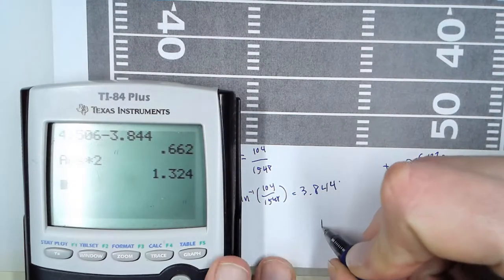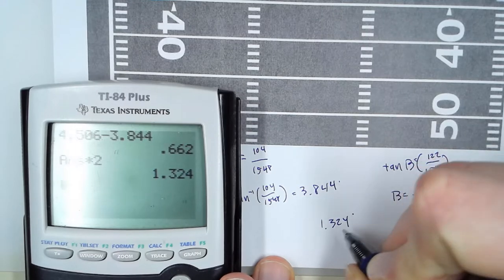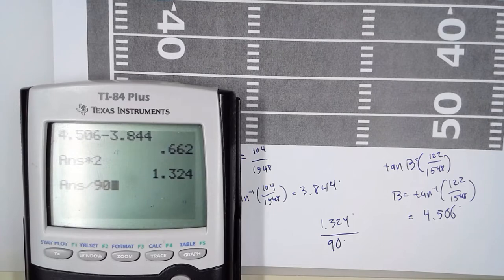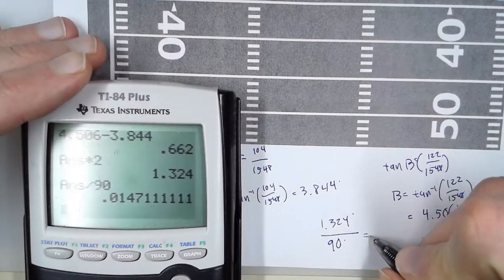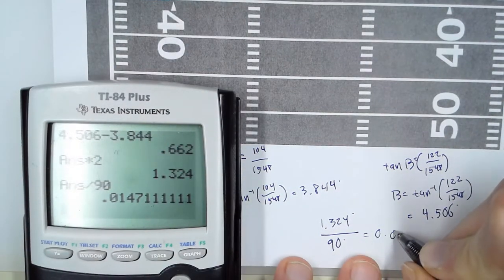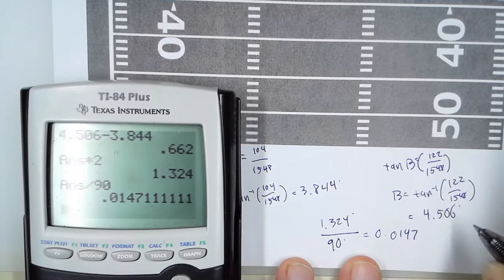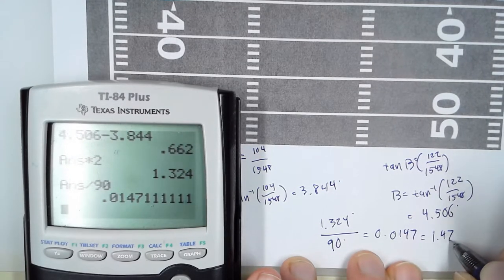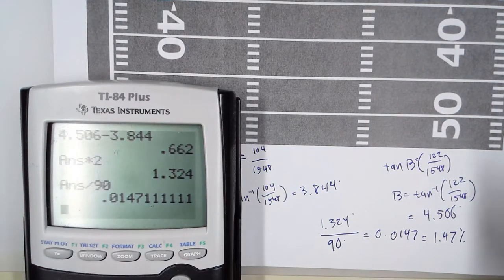So it's 1.324 degrees out of a possible 90 degrees. So when we do that, we get 0.0147, or as a percentage, 1.47% of the time.